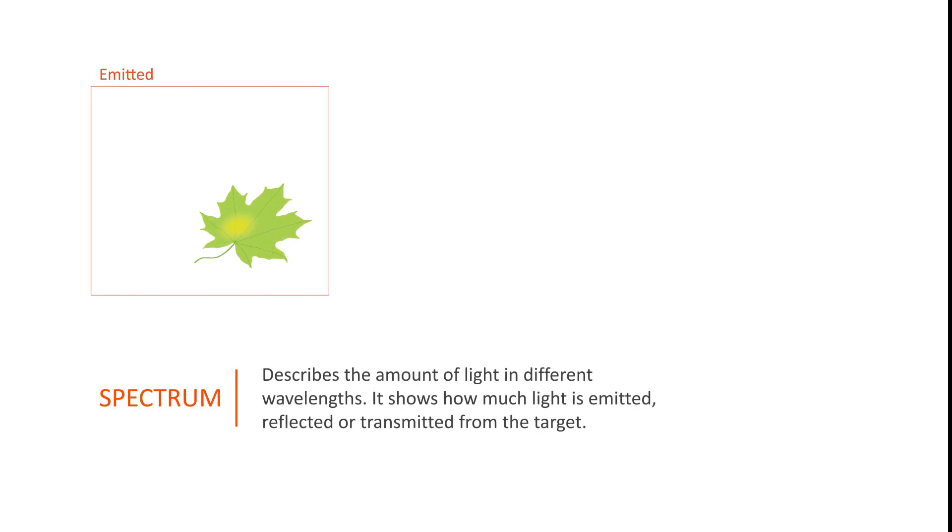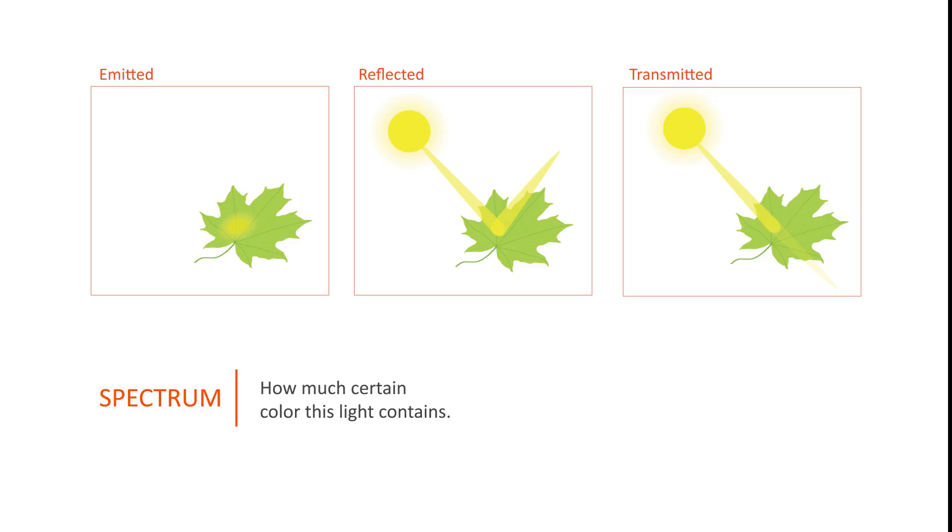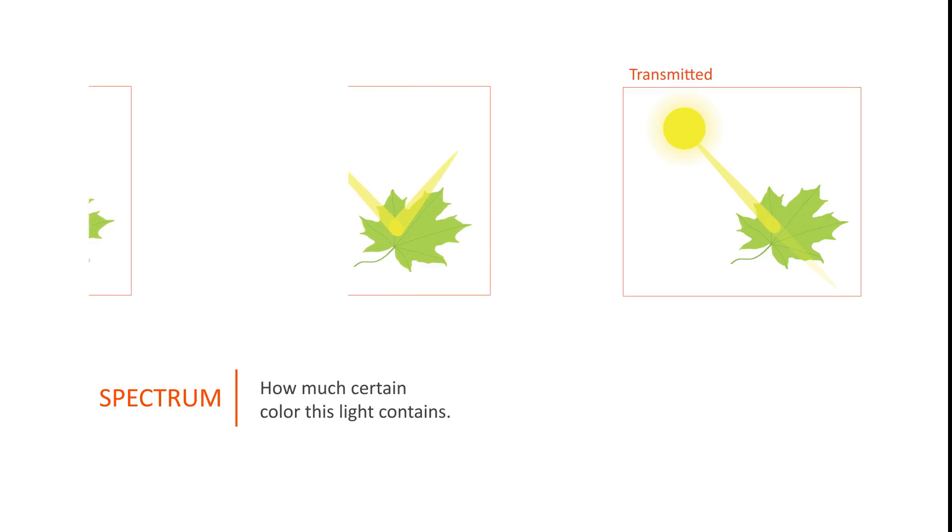It shows how much light is emitted, reflected, or transmitted from the target. To put it in short, the spectrum tells how much of a certain color this light contains.